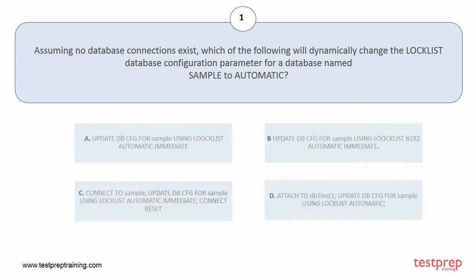Your options are: A. Update dbcfg for sample using locklist Automatic Immediate. B. Update dbcfg for sample using locklist 8192 Automatic Immediate. C. Connect to sample, update dbcfg for sample using locklist Automatic Immediate, Connect Reset. D. Attach to db2inst1, update dbcfg for sample using locklist Automatic.